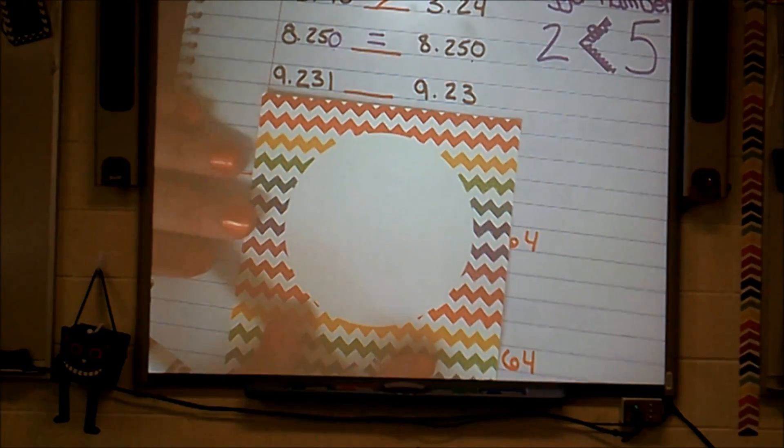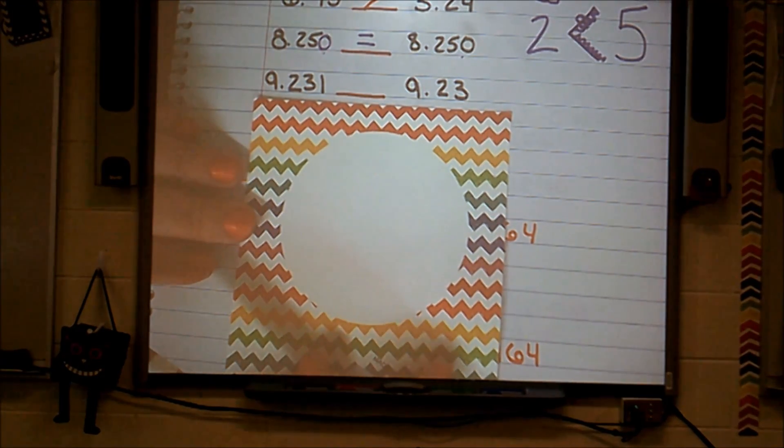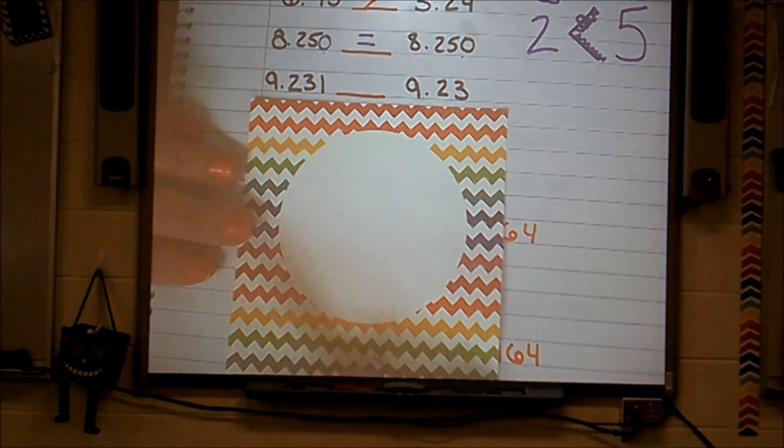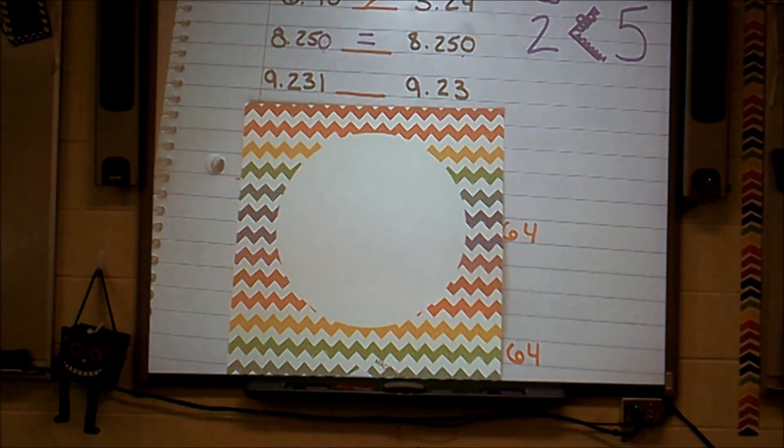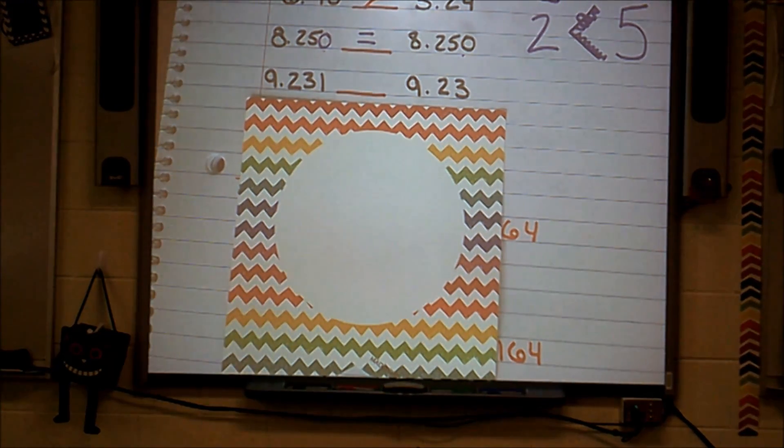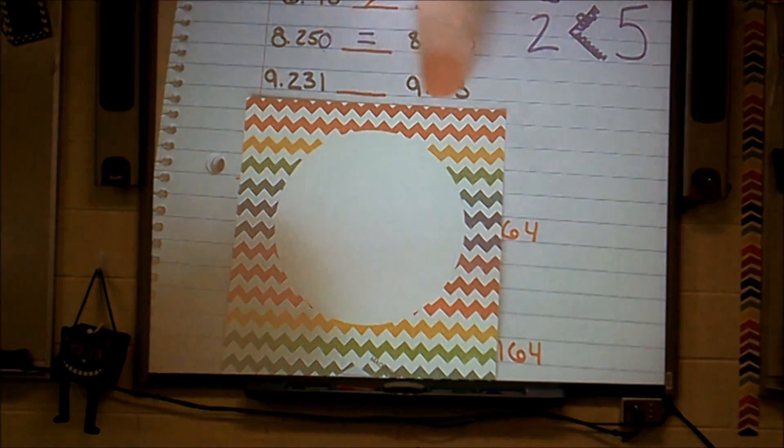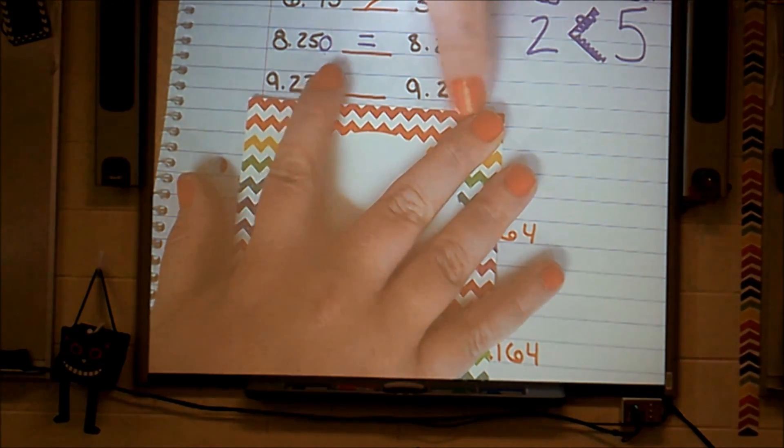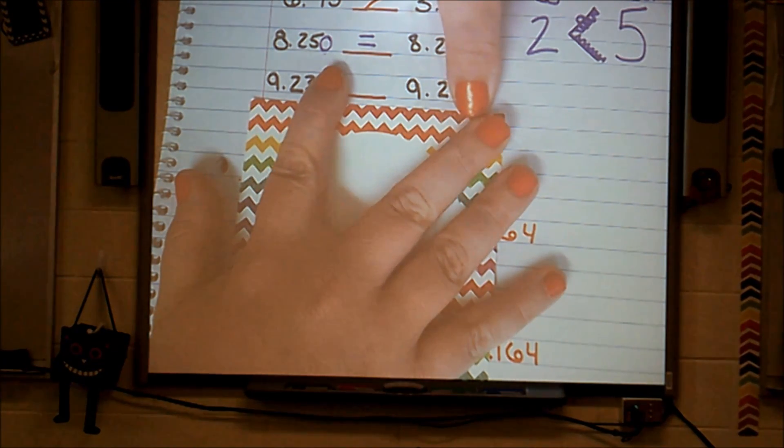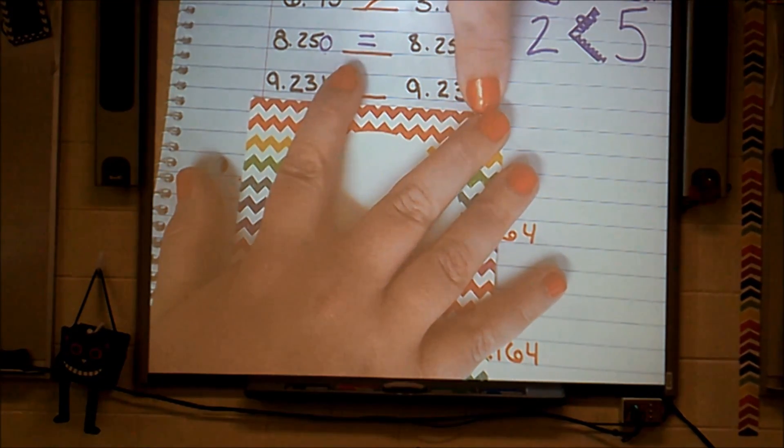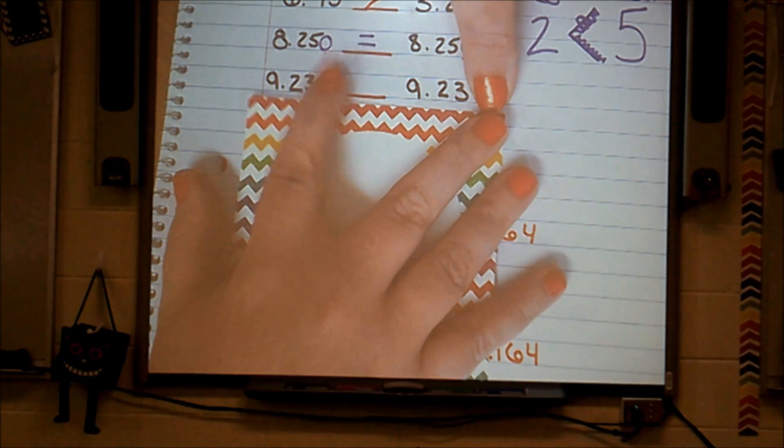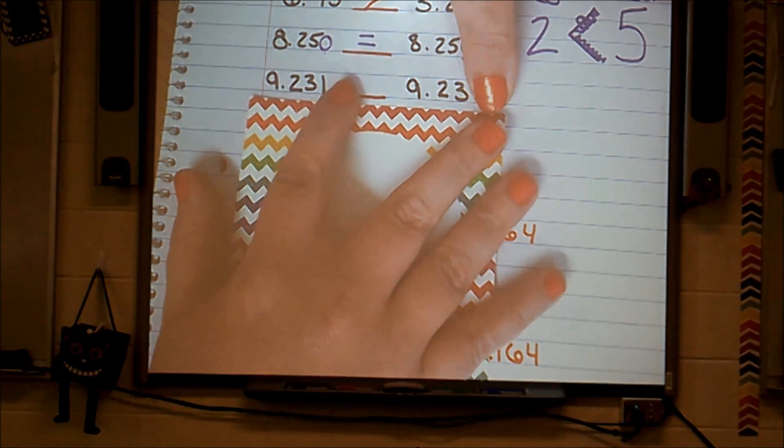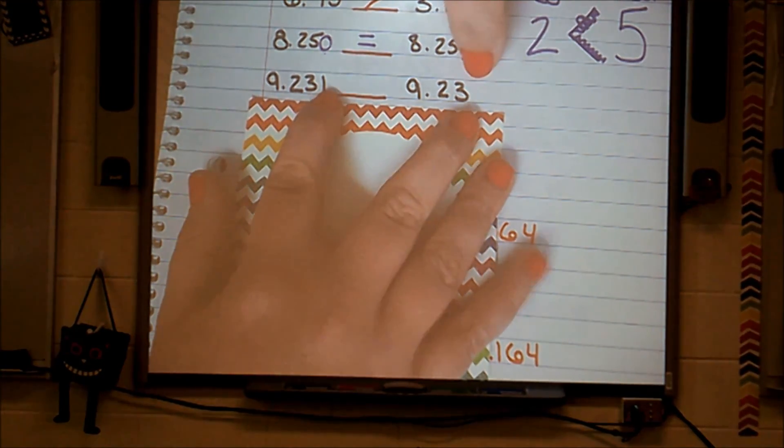Let's look at this number. 9 and 231 thousandths compared to 9 and 230 thousandths. Let's attack it the same way. In my 1's place of both numbers, I have a 9. In my tenths place, I have a 2 in both numbers. Followed by a 3 in both of those numbers. And then this number has a 1 in its thousandths place. And this number has nothing in its thousandths place.